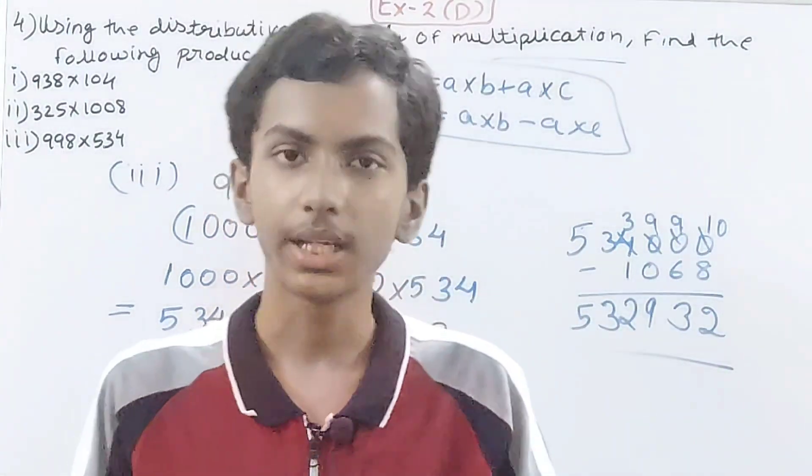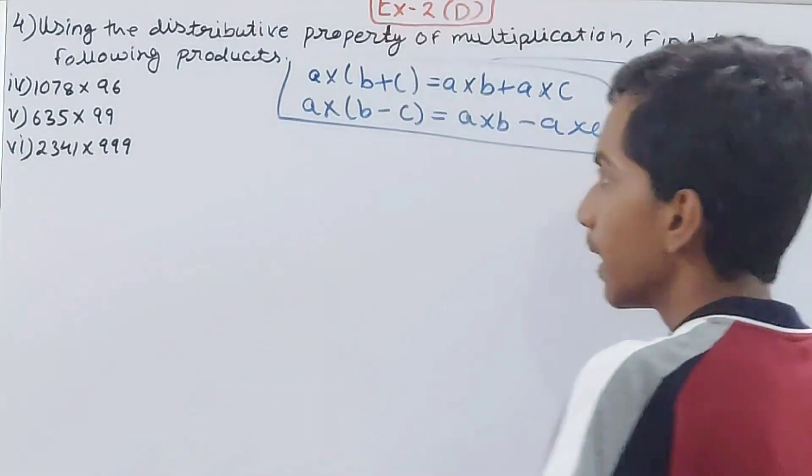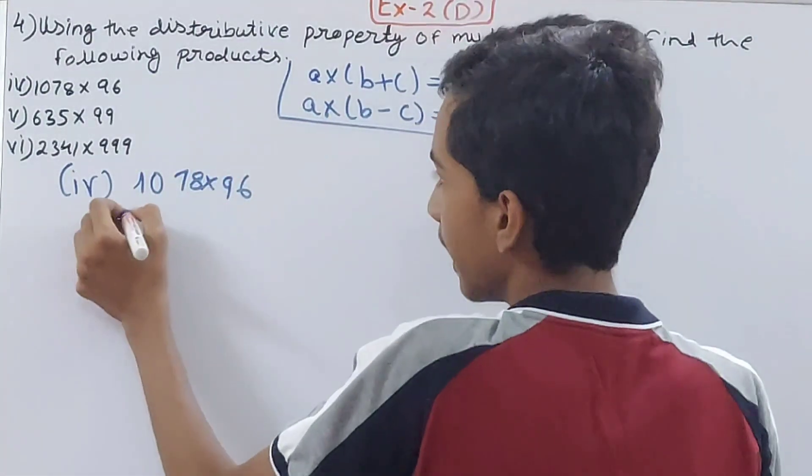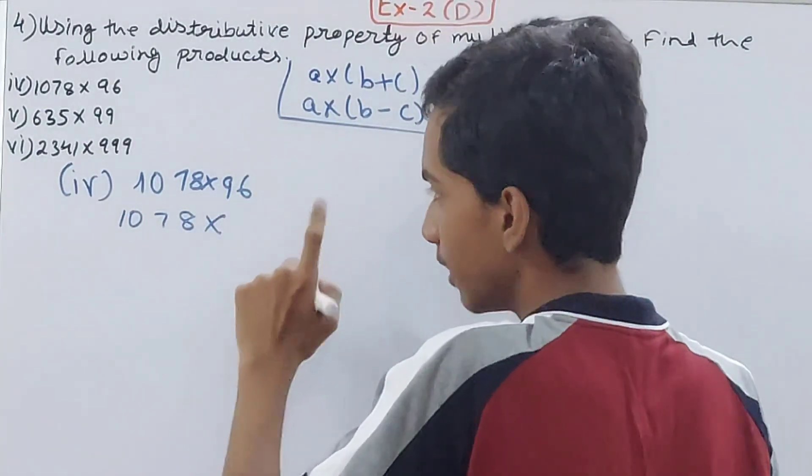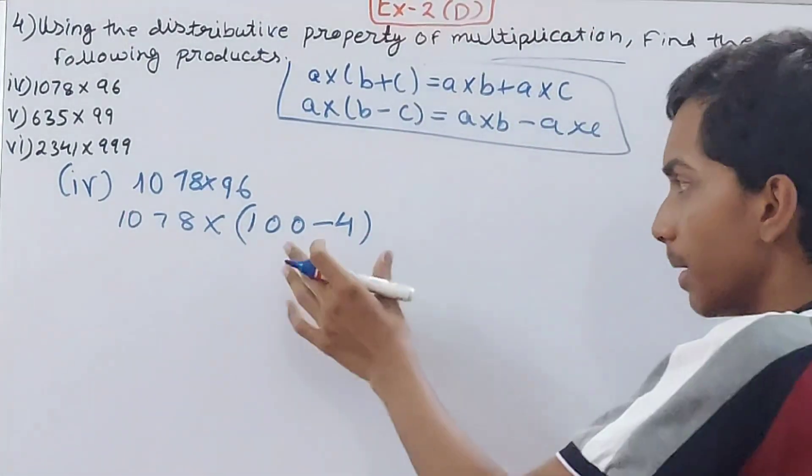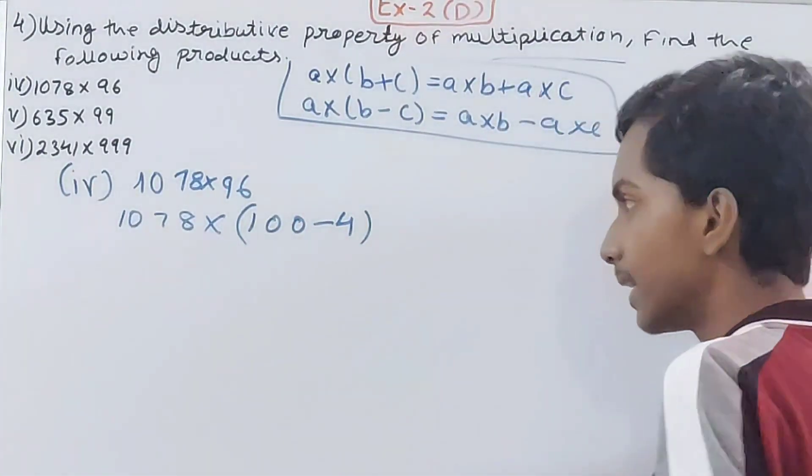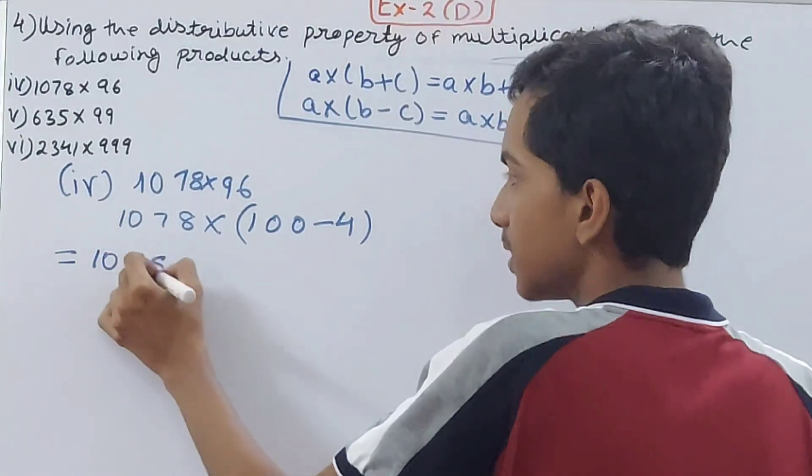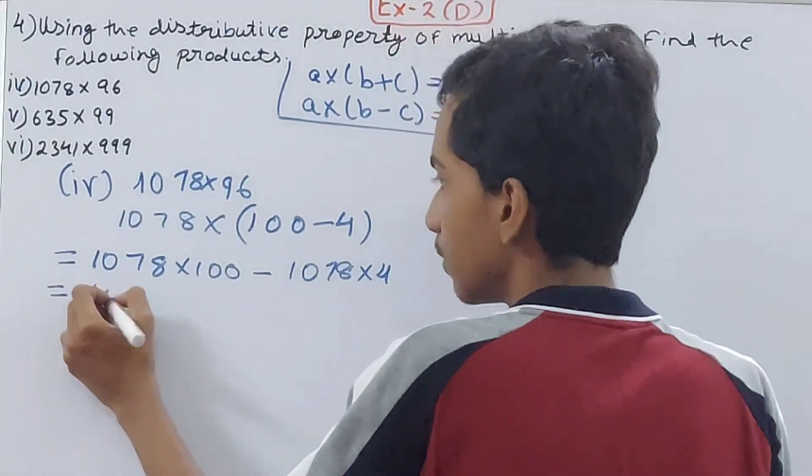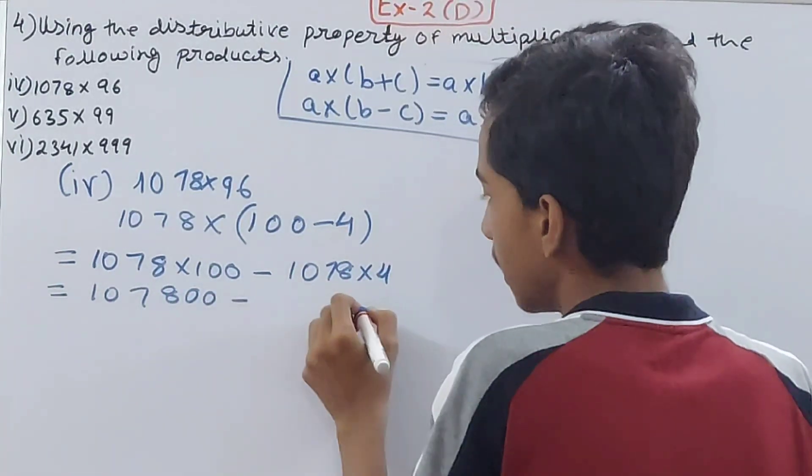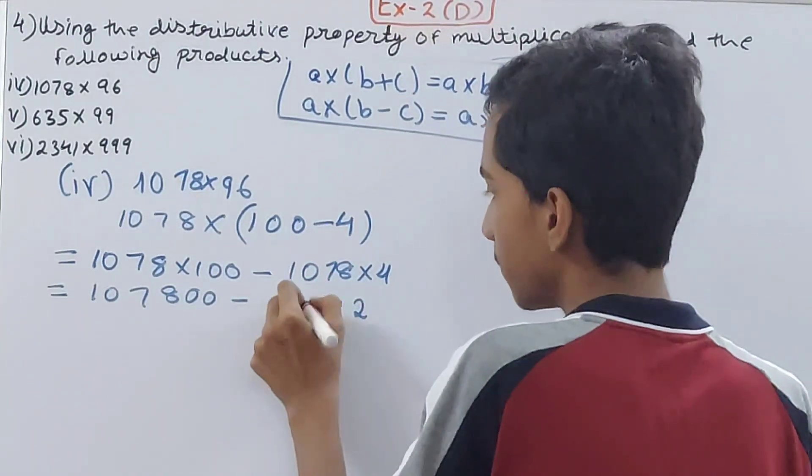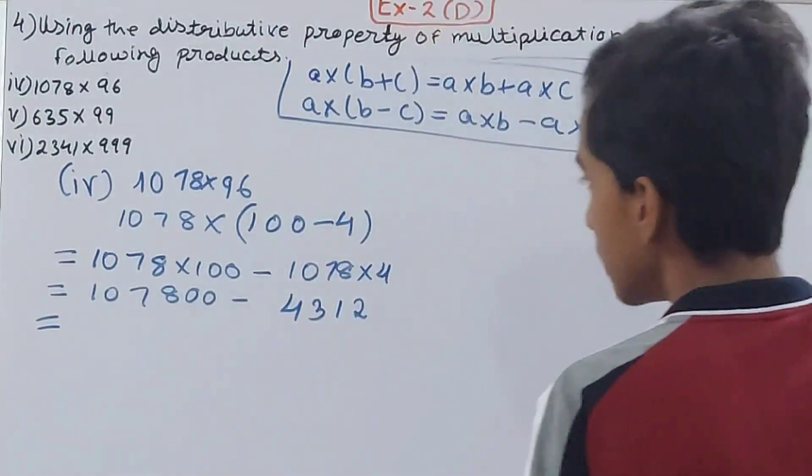The fourth part: 1078 × 96. Break 96 down so one number is 100. You'll have 100 - 4. Now multiply: 1078 × 100 minus 1078 × 4. That's 107,800 minus 4,312.